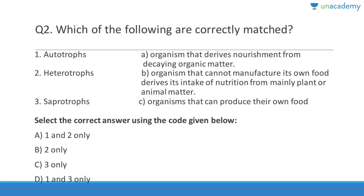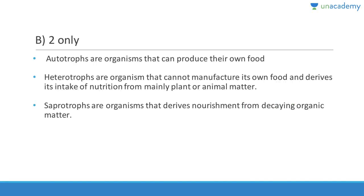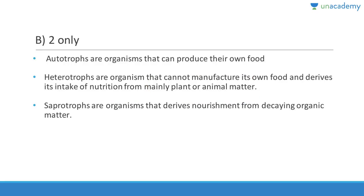Question 2: Autotrophs are the organisms that derive nutrition from taking organic matter — that is actually saprotrophs, so that statement is wrong. Heterotrophs are organisms that cannot manufacture their own food and derive nutrition mainly from plants and animal matter — that is correct. Saprotrophs derive nutrition from dead organic matter, and autotrophs can produce their own food.